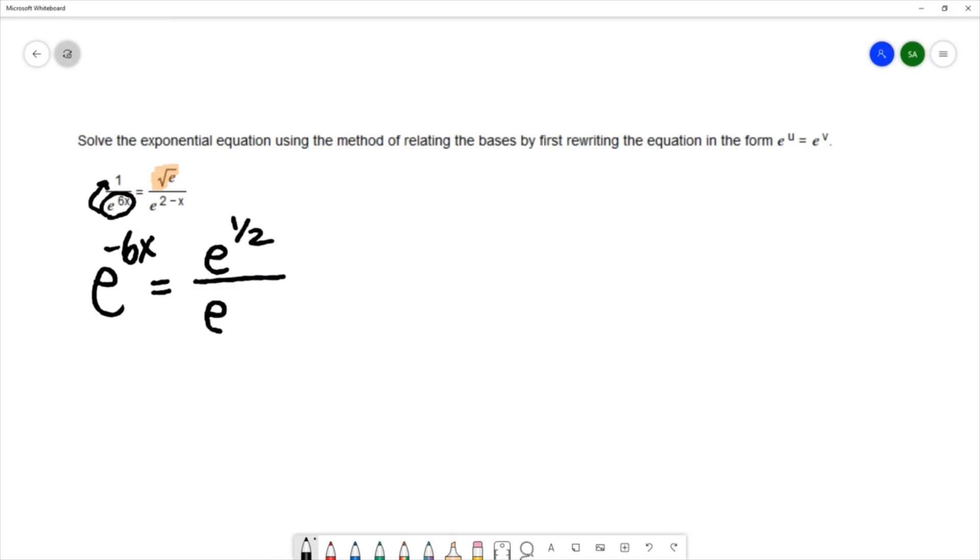In the denominator there's no simplification needed at the moment. We'll leave that as e to the 2 minus x.